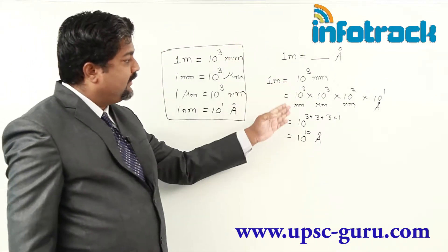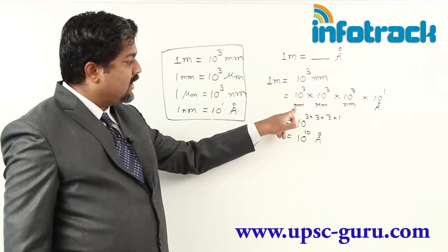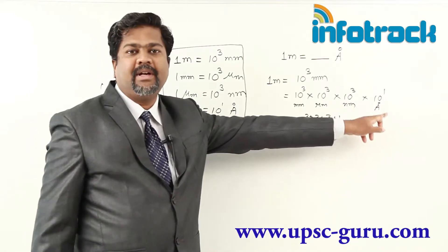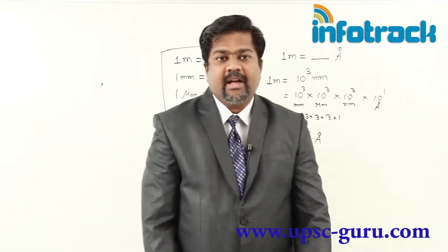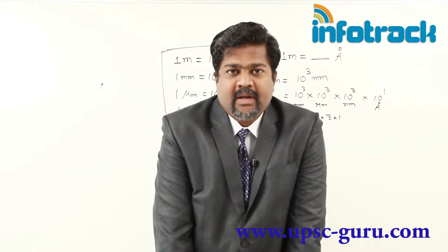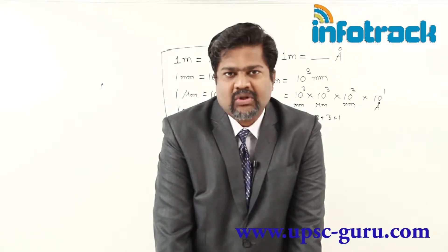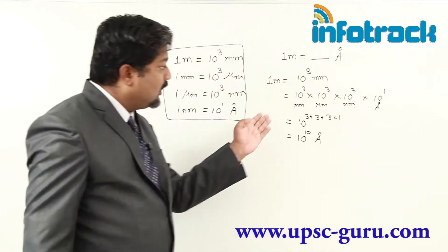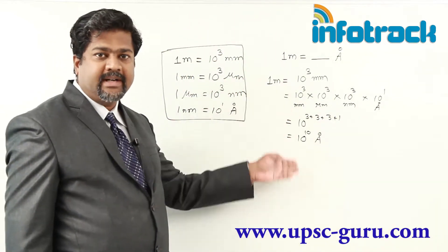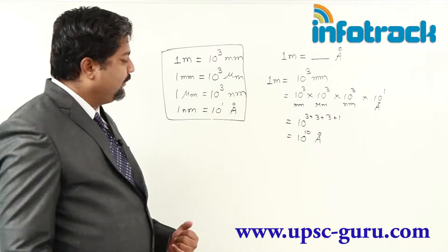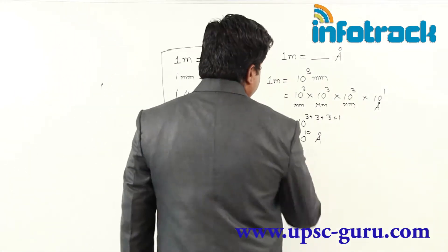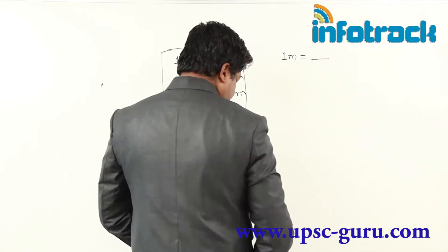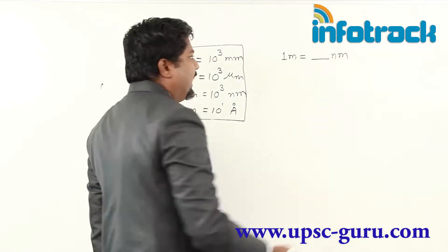So starting from 1 meter, we stepped through millimeter, then micrometer, then nanometer, and ultimately angstrom. The answer is 1 meter equals 10 raised to 10 angstrom. Take it down — pause this video, take it down, then resume. One more sum for you: 1 meter equals how many nanometers? Try to solve the sum the same way and you will realize why we use the term 'nano'.